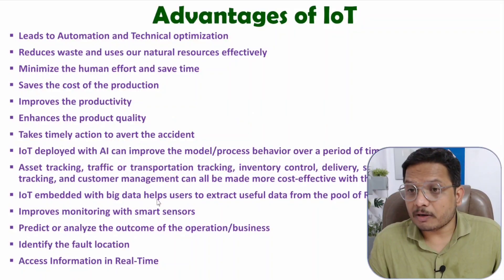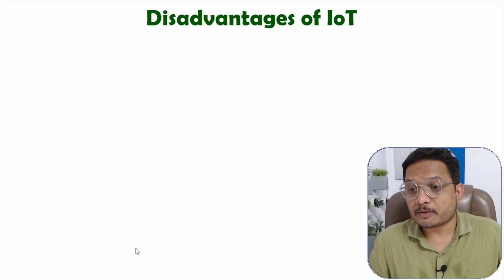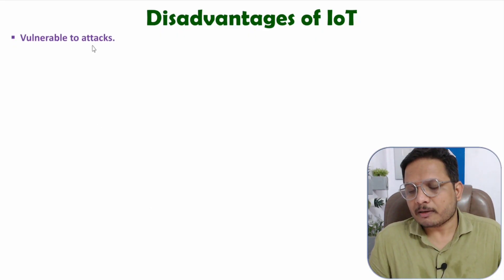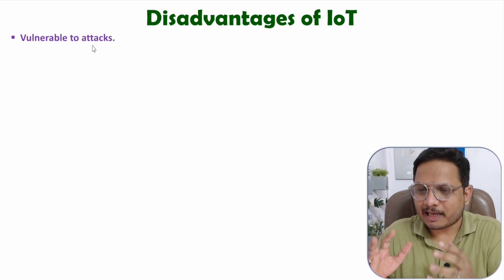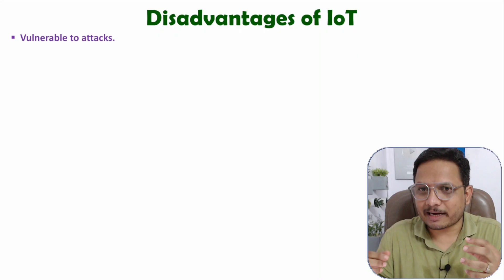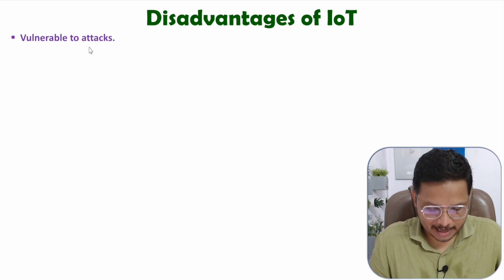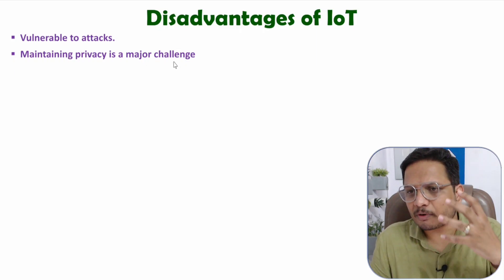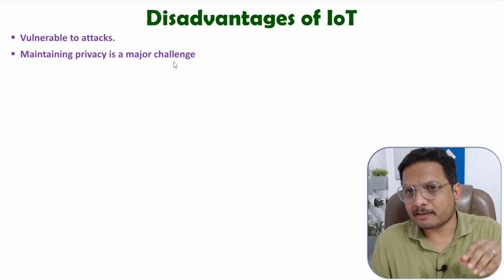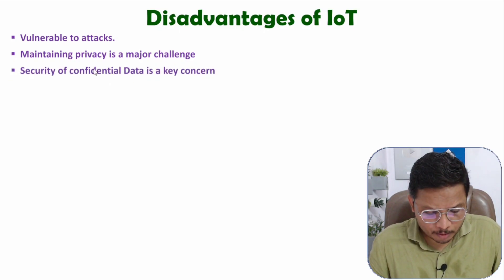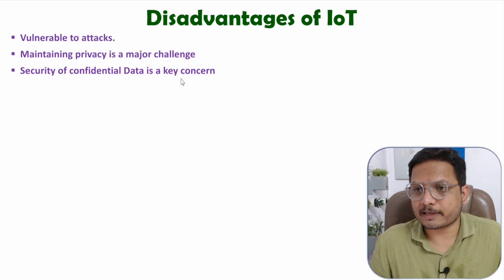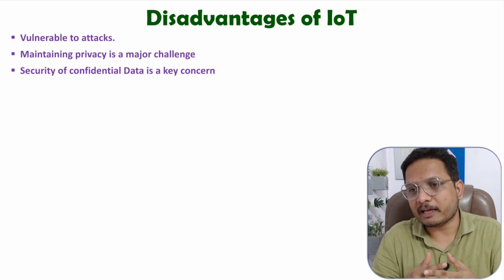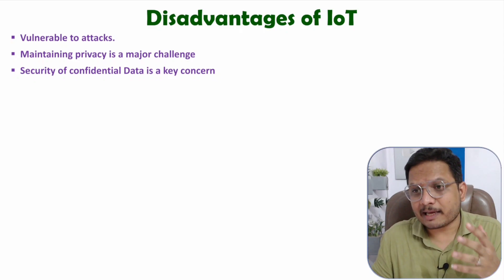Now let me explain the disadvantages of IoT. When we talk about disadvantages, you should know it is vulnerable to attacks. As everything is available on the internet, there is a high probability that a hacker may hack the system. So it is always vulnerable to attacks. Maintaining privacy is a major challenge, because all users are accessing information from the internet. Security of confidential data is also a key concern, as all users are uploading their data on the internet. If somebody is hacking the system, the security of confidential data becomes a key concern.